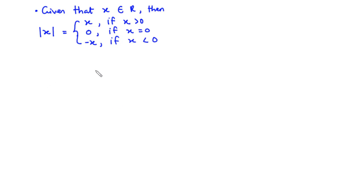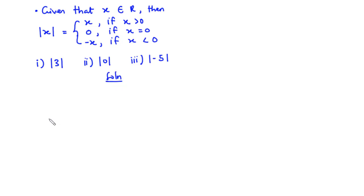Let's try to solve some examples and find the absolute values of these real numbers: (i) absolute value of 3, (ii) absolute value of zero, and (iii) absolute value of negative 5. For (i), since 3 is greater than zero, the absolute value of 3 is equal to 3.